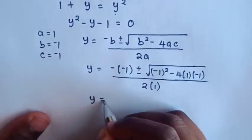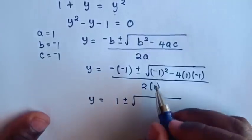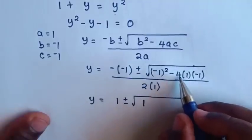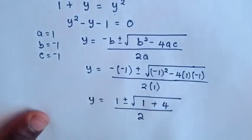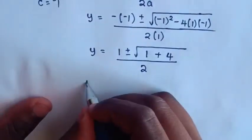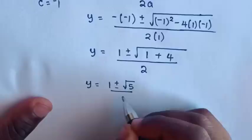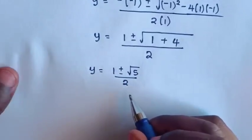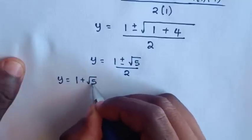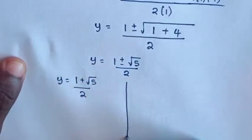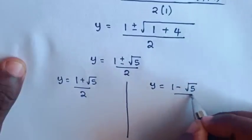Then y is equal to positive 1, plus or minus square root of — negative 1 squared is 1, negative 4 times 1 times negative 1 is positive 4 — over 2. So y is equal to 1 plus or minus square root of 5, over 2. We have two solutions: y is equal to 1 plus square root of 5 over 2, and y is equal to 1 minus square root of 5 over 2.